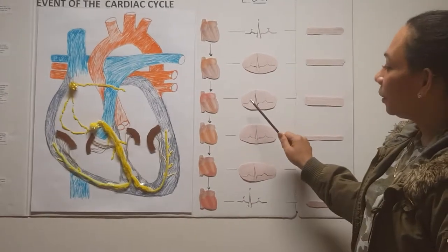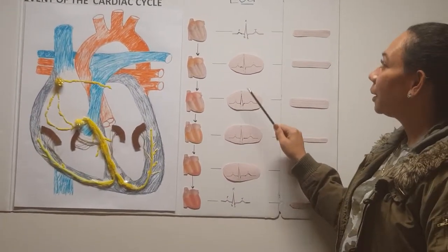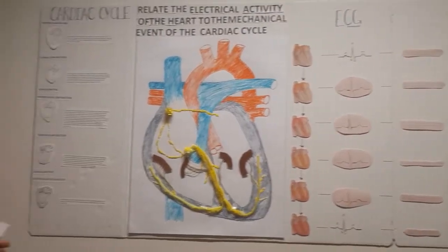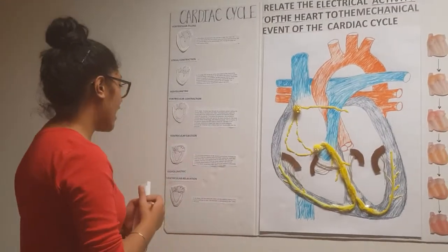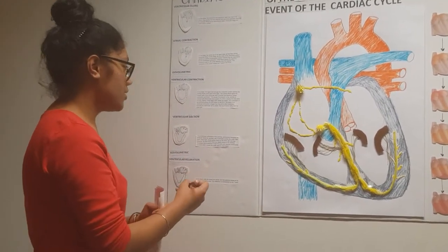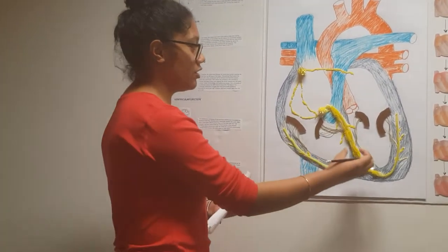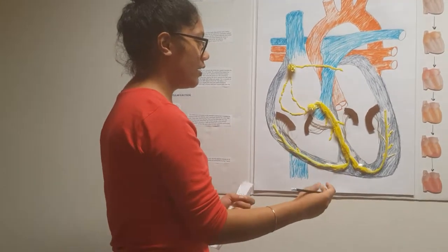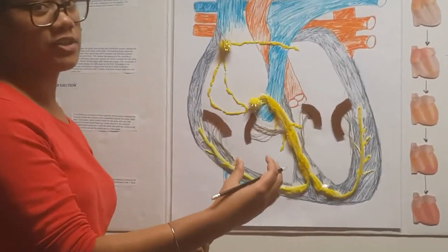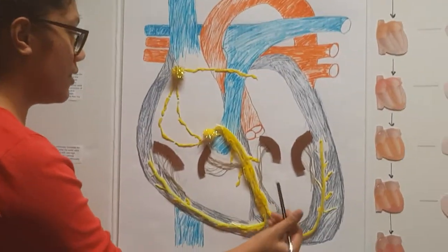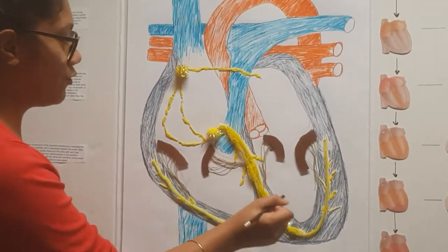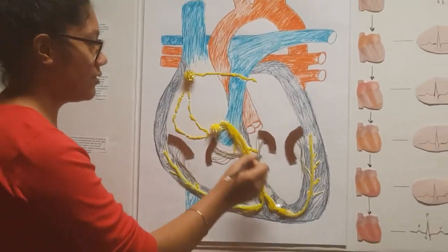This is recorded as the QRS complex in the ECG. The next stage of the cardiac cycle is ventricular ejection, which is when the continuous contraction of the ventricle increases pressure, and the increasing pressure eventually causes the outlet valve to open, and then blood will flow out at higher pressure.